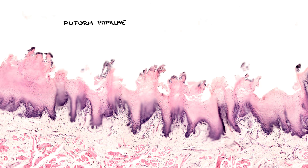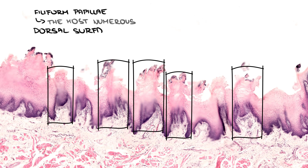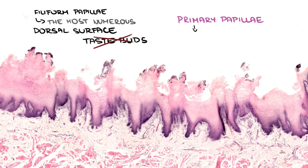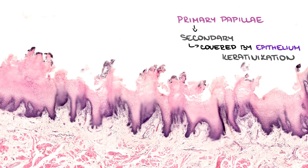The most numerous papillae are the filiform papillae. We can find them on the entire dorsal surface of the tongue. They do not contain taste buds. Apart from the primary papillae, there are smaller secondary papillae, which are covered by epithelium from which groups of cells detach and undergo keratinization. That's why we can see them with our own eyes as small grey or whitish dots on our tongues.